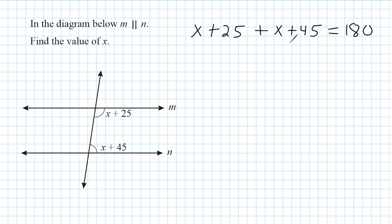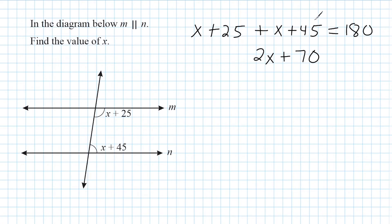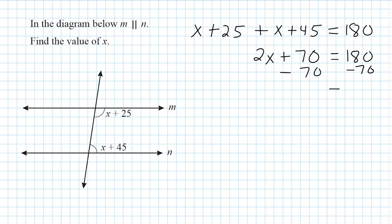Next we simplify everything on the left side. We have 1x and 1x, which combined gives us 2x. We have positive 25 and positive 45, which combined gives us 70. So we simplify the left side to 2x plus 70, which is equal to 180. Next we do the inverse of plus 70, which is minus 70 on both sides, leaving us with 110 on the right.